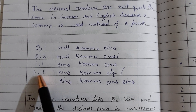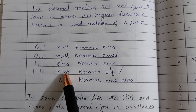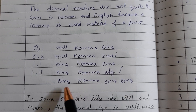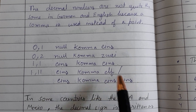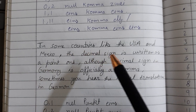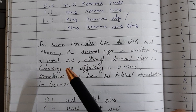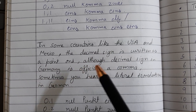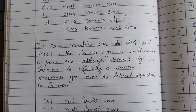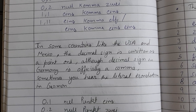1.11 is written as 'eins comma elf' or 'eins comma eins eins'. In some countries like the USA and Mexico, the decimal sign is written as a point, whereas in Germany the decimal sign is officially a comma.